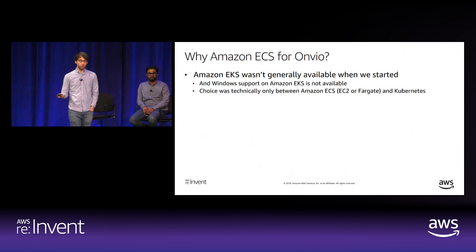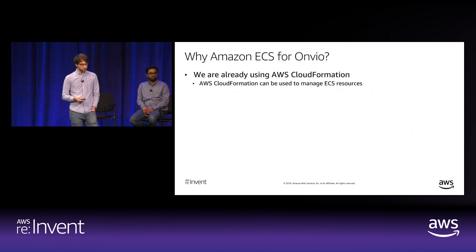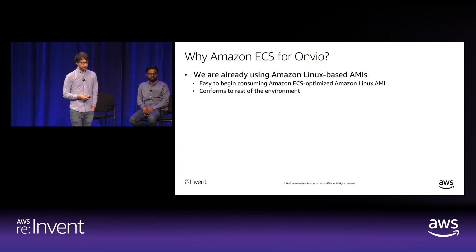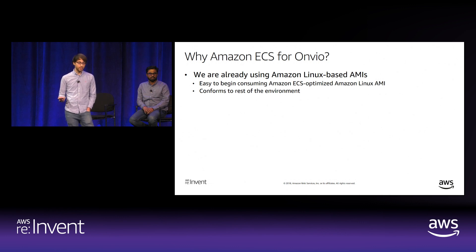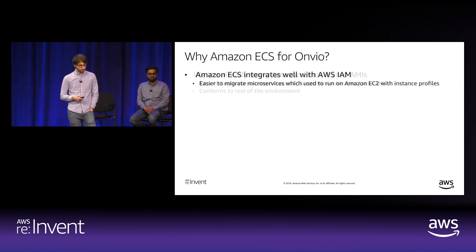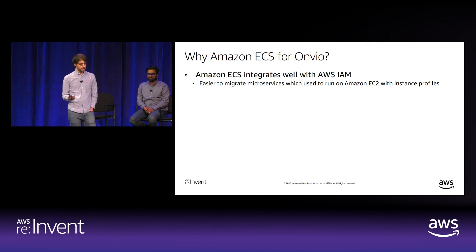Even with other options, there are many reasons to choose Amazon ECS. We were already using CloudFormation as our infrastructure-as-code solution, and CloudFormation can manage ECS resources. The base AMI we use for Linux is Amazon Linux, and AWS provides an ECS-optimized Amazon Linux AMI—easy to adopt since it matched our existing environments. Onvio microservices were already using IAM instance profiles for permissions, and Amazon ECS integrates well with IAM, so we could continue managing permissions the same way.